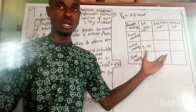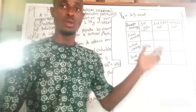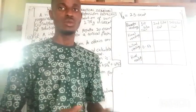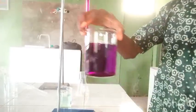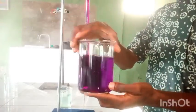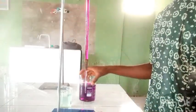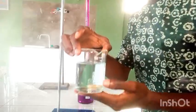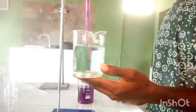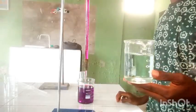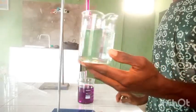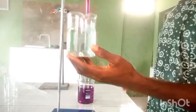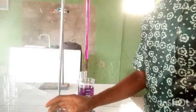We will look at the table, run the experiment, fill up the table, and do the calculations. Solution A is purple in colour — that is KMnO4. Solution B, which is FeSO4, has a light blue-green colour. We want to titrate the two solutions and get our results.